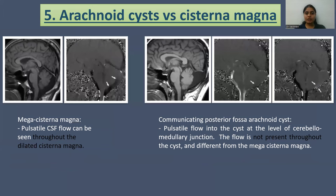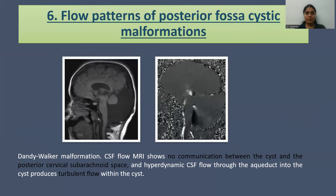Arachnoid cyst versus cisterna magna: in megacisterna magna, pulsatile CSF flow can be seen throughout the dilated cisterna magna. Whereas in communicating posterior fossa arachnoid cyst, pulsatile flow into the cyst at the level of the cerebellomedullary junction is seen; however, the flow is not present throughout the cyst, and it is different from that of megacisterna magna.